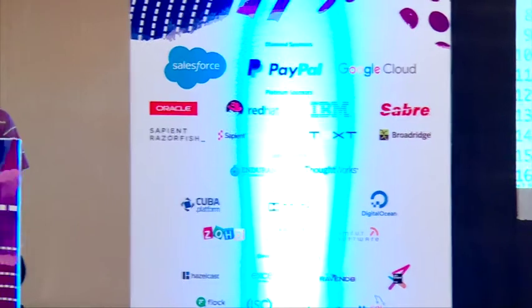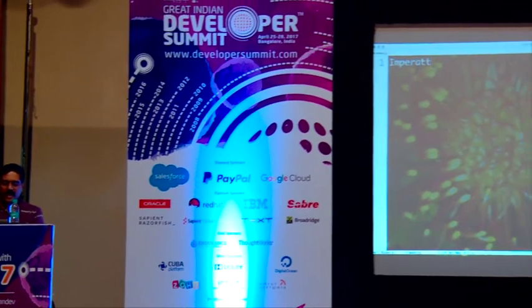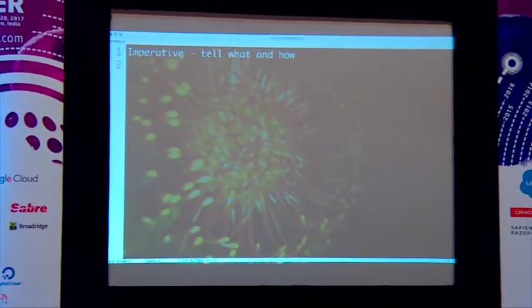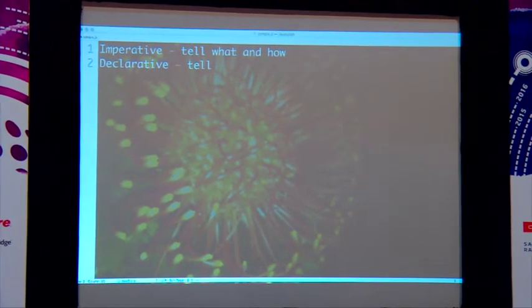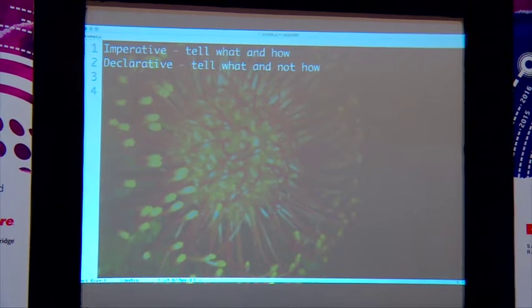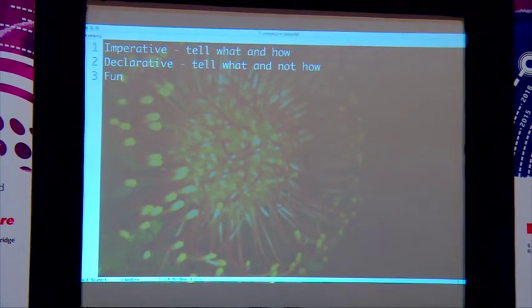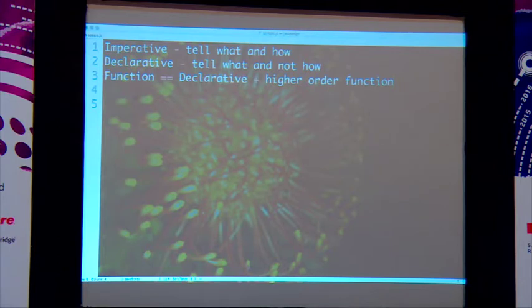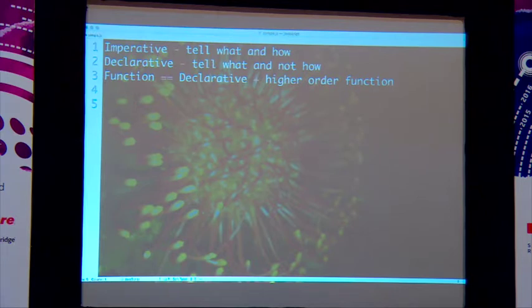All previous versions of Java took a lot less effort to learn compared to Java 8, because Java 8 didn't just introduce new syntax — it modified the paradigm. And when the paradigm shifts, it takes a lot more effort to understand. So let's talk about functional programming. Imperative style is where you tell what and how. In declarative style, tell what and not how. Functional is declarative plus higher order functions — that's the relationship between these three paradigms.